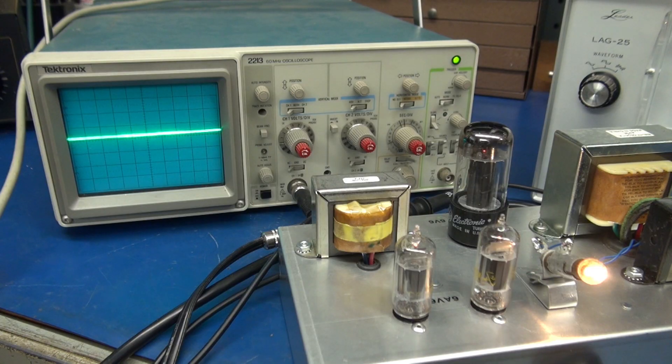All right, let's move on to signal injection and take a look at that sine wave. Now let's take a look at the output of the amplifier. I have an audio generator connected, one kilohertz at approximately 200 millivolts input. A perfect sine wave.